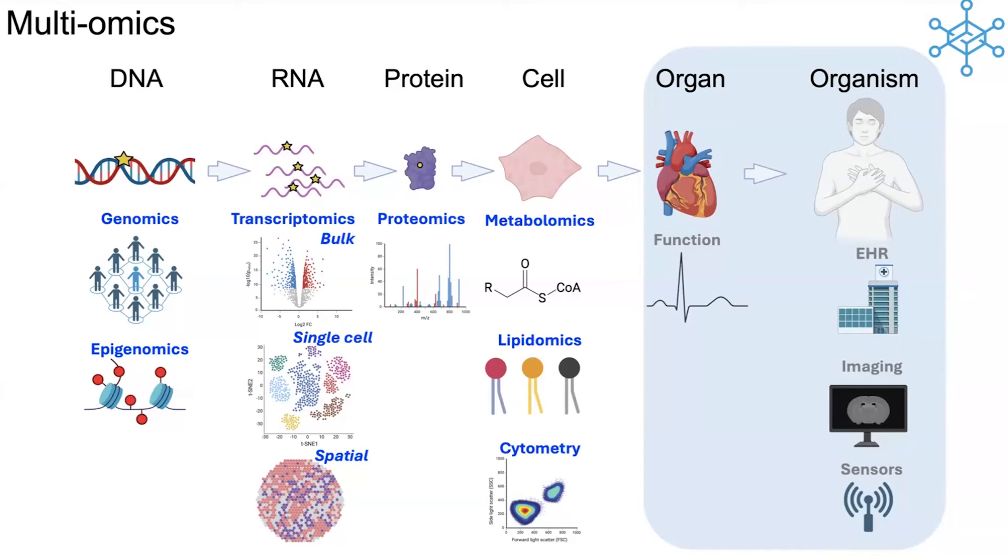Then there are a number of other omic modalities that can look at cellular or organ outputs, for example, metabolomics, these small molecules, and lipidomics, and cytometry, which can be done at scale now to look at cellular differentiation, numbers of relevant cell types. The challenge is how these various modalities can best be integrated, sometimes with missing data types, to provide insights into organ level or organism level biology.